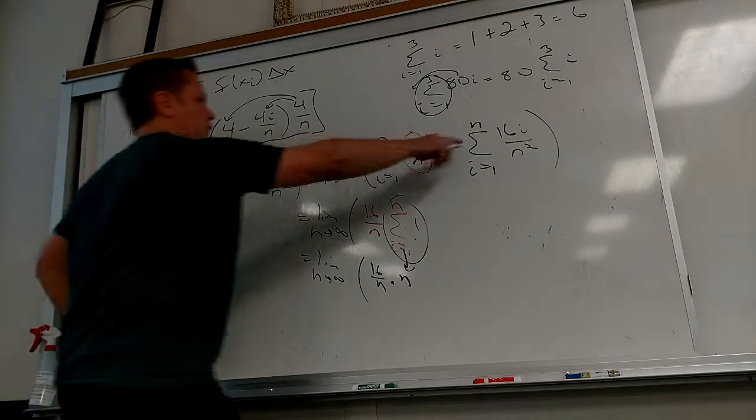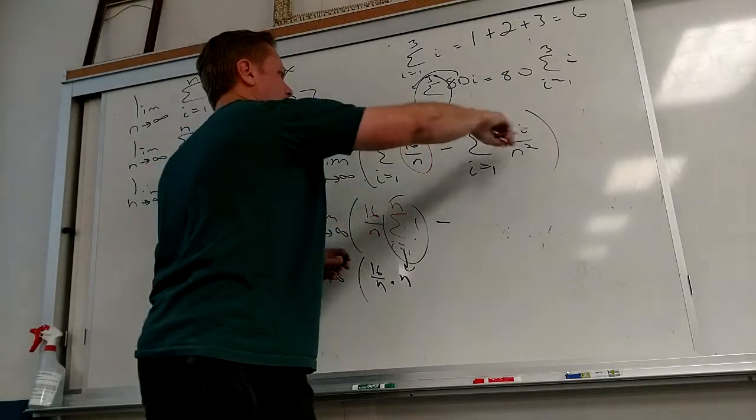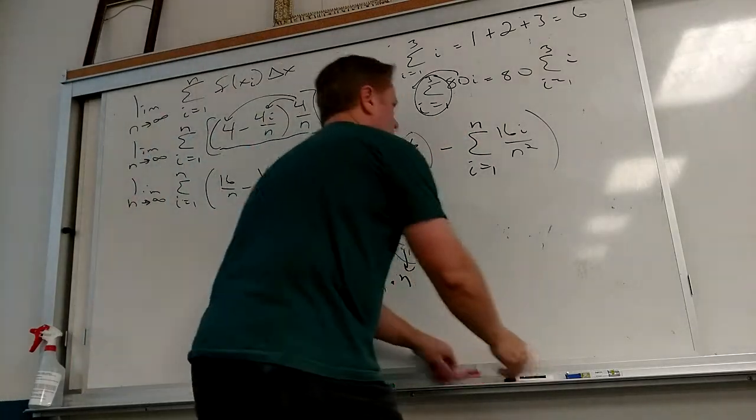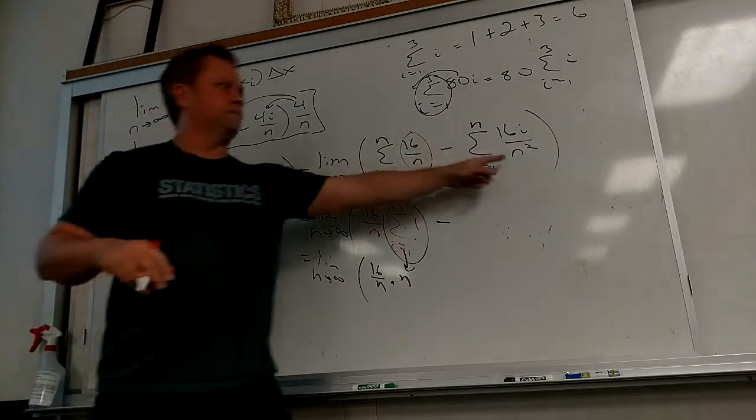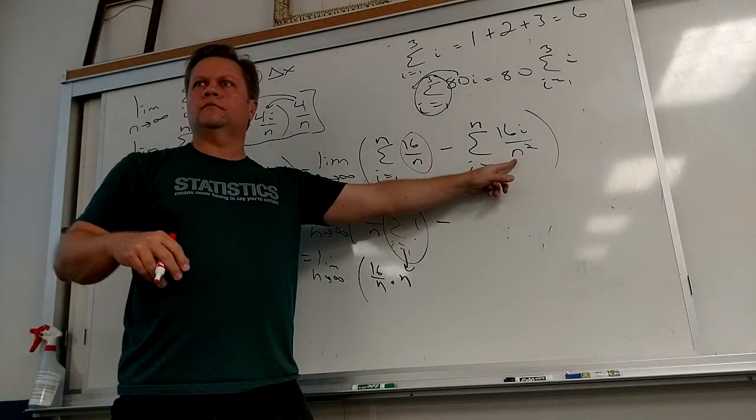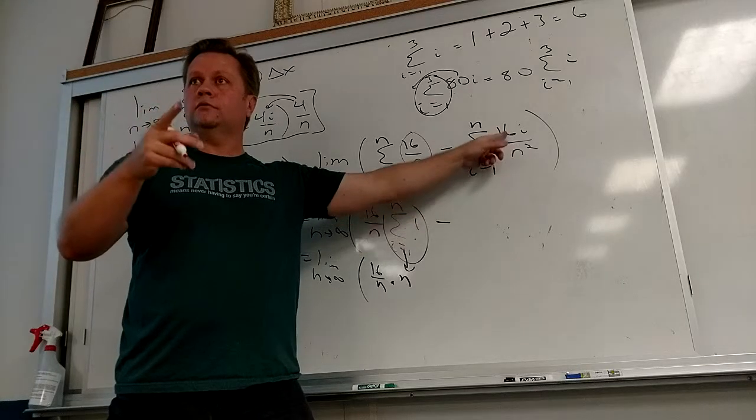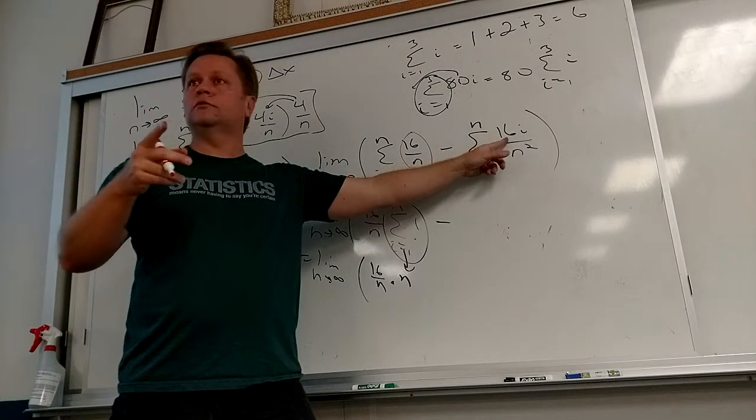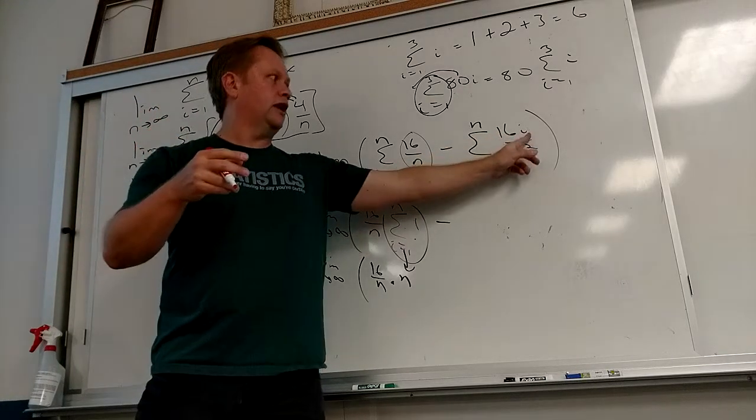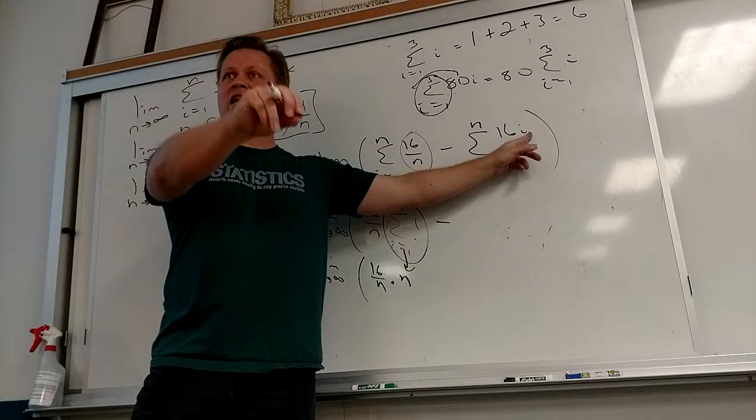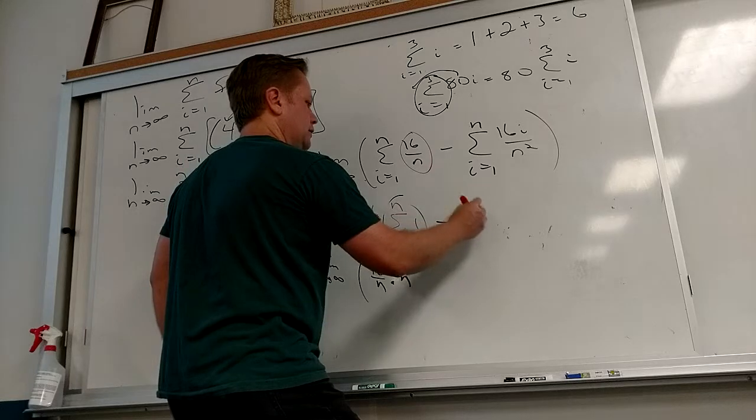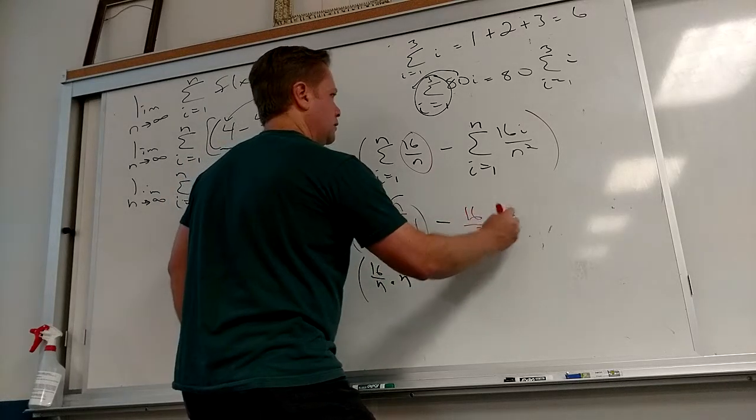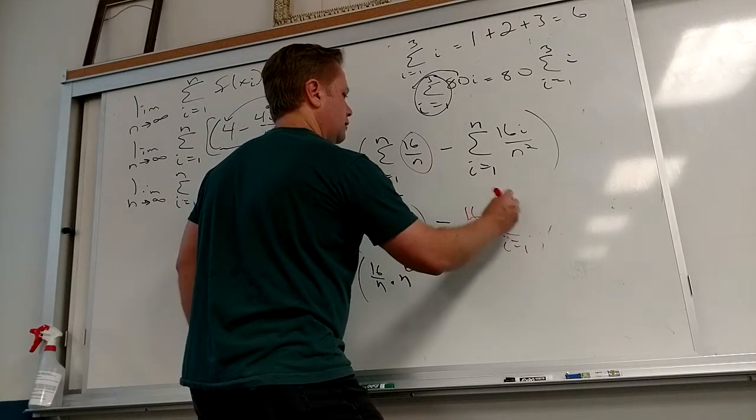Now let's keep going over here. Minus... What can I factor out of this guy? What comes out of him? N squared and 16, right? Because anything that has an i has to stay. Well, the i has an i, it's got to stay. Minus 16 over n squared sum of i equals 1 to n. I.